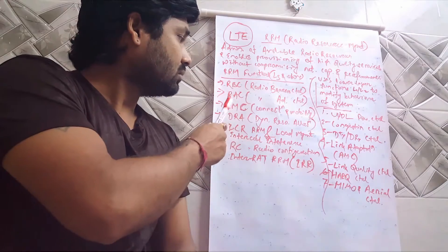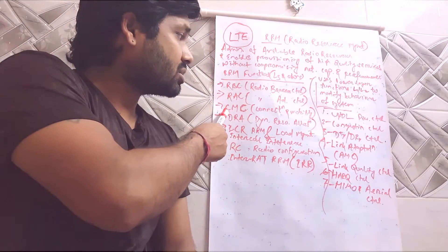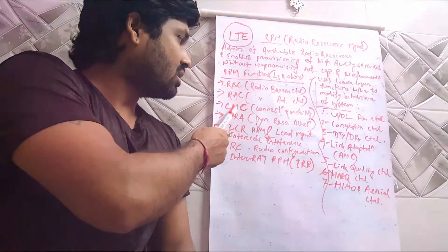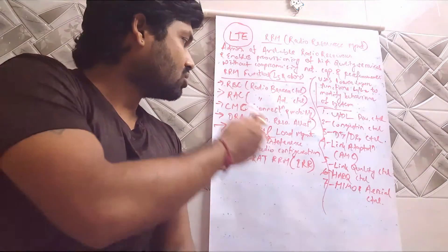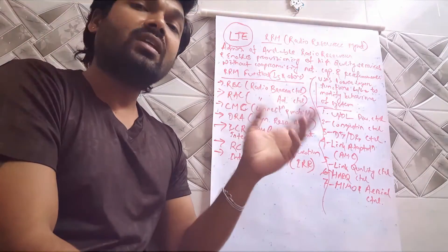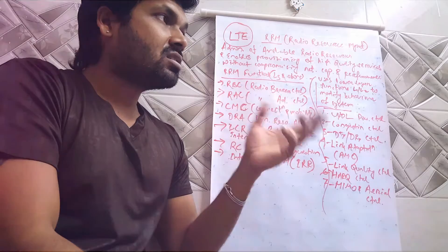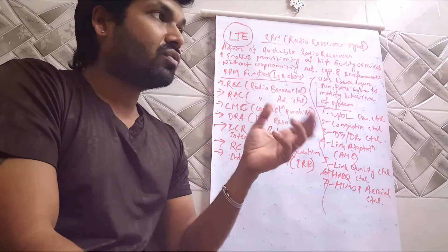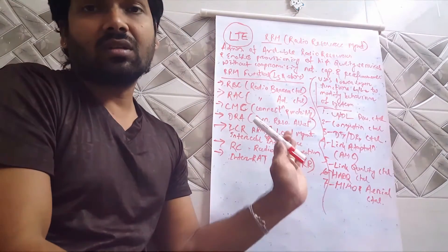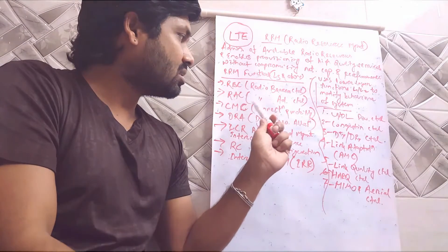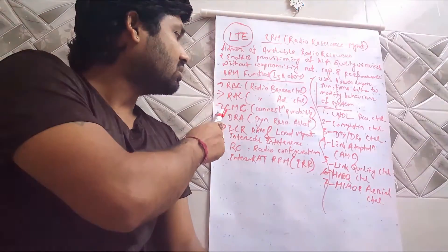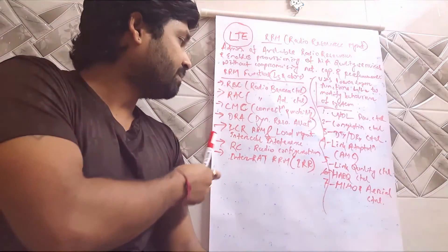The third function is Connection and Mobility Control, or CMC — C for Connection, M for Mobility, C for Control. All kinds of connection controls and mobility, whether intra-frequency, inter-frequency, or other handovers, are handled here by CMC, which is the third important function of Radio Resource Management.